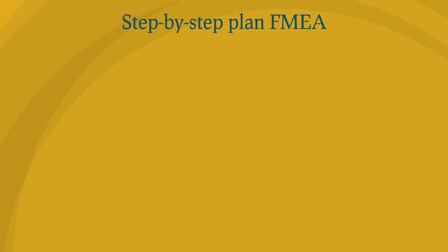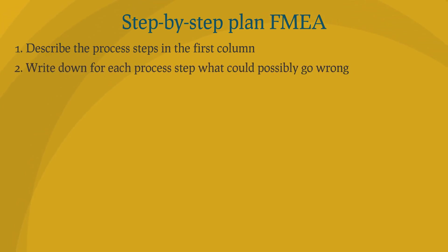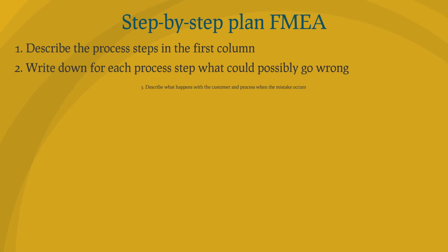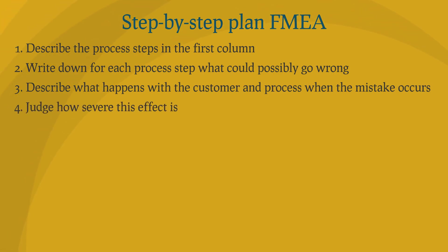Step-by-step plan for Failure Mode Effect Analysis. 1. Describe the process steps in the first column. 2. Write down for each process step what could possibly go wrong. 3. Describe what happens with the customer and process when the mistake occurs. 4. Judge how severe this effect is.